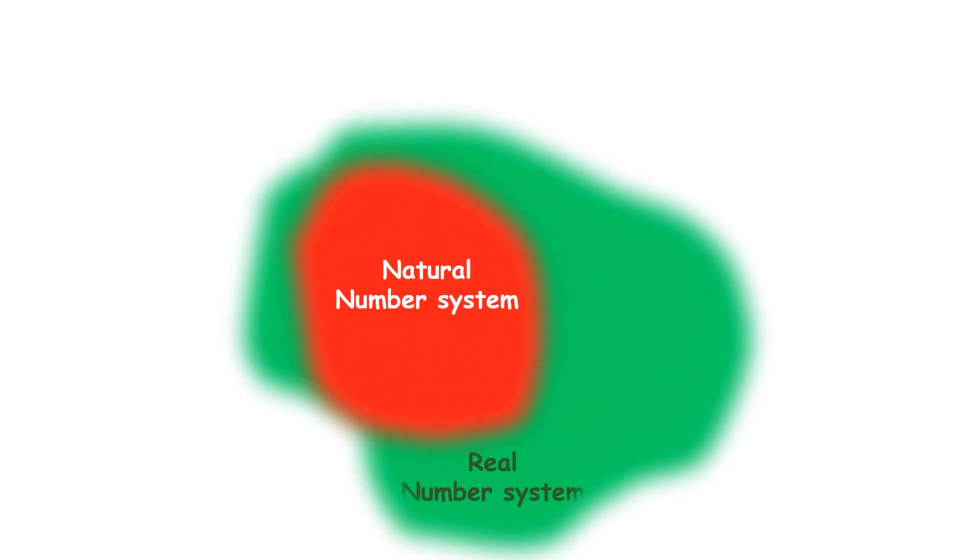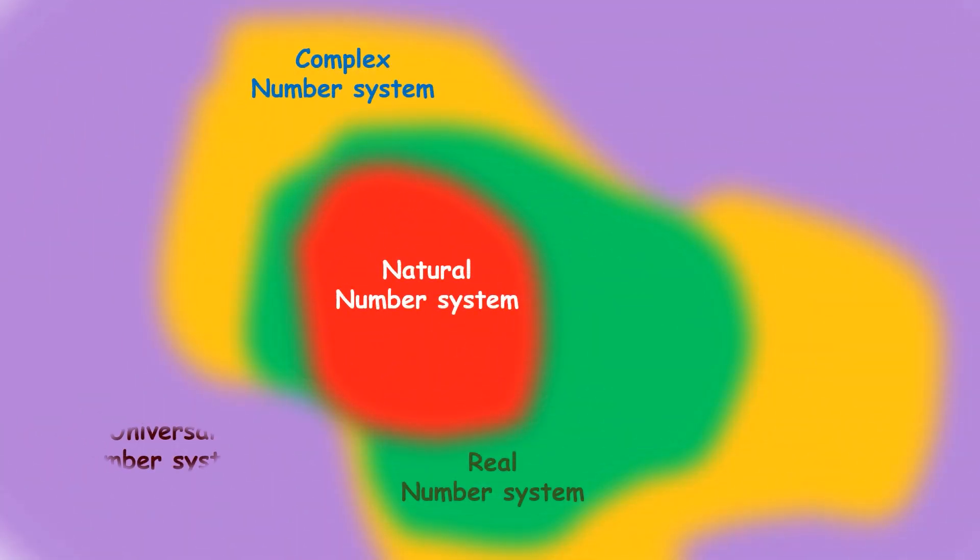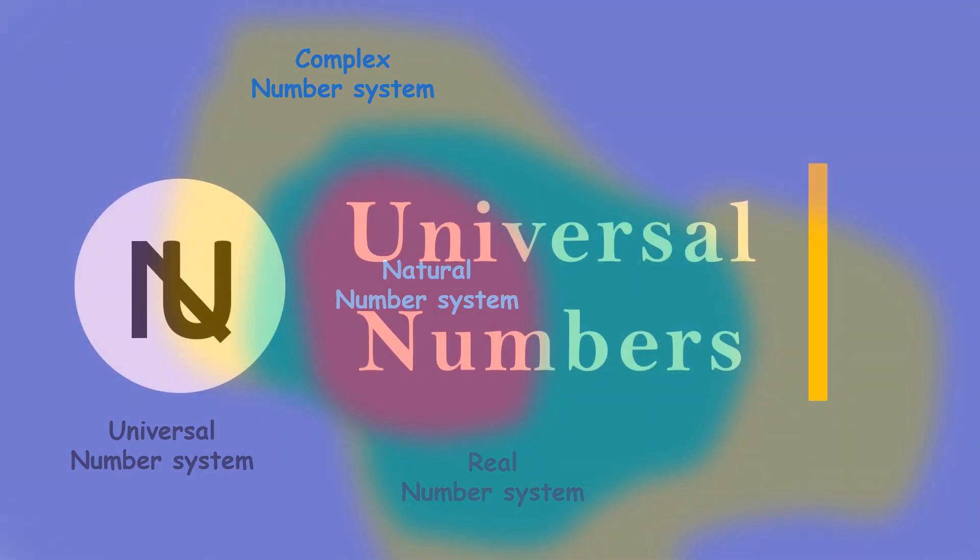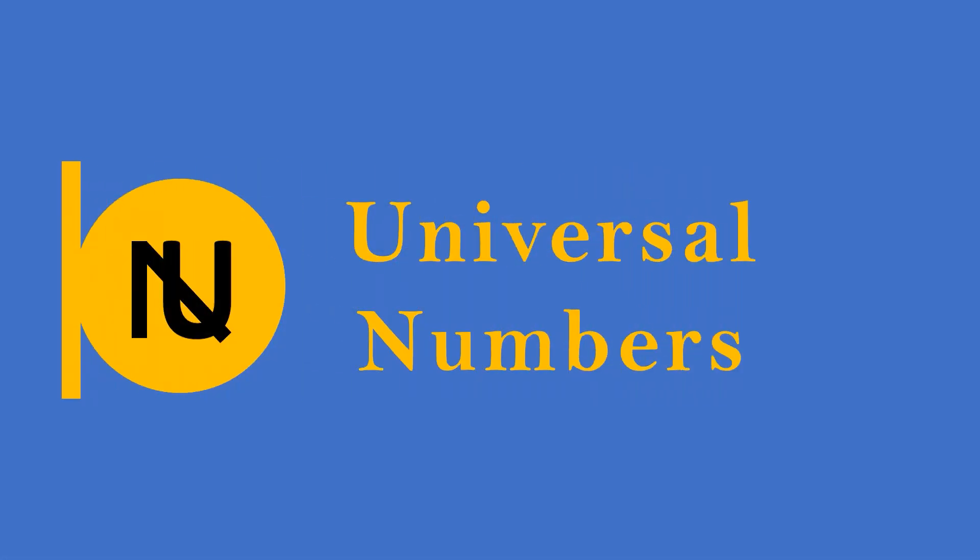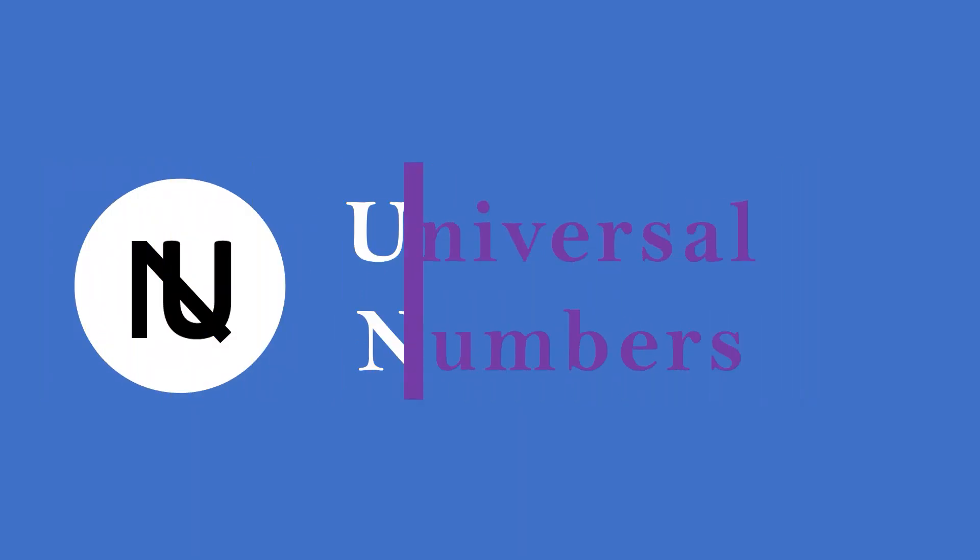There are many number systems and domains in mathematics, including a newly discovered number system named the universal number system. One basic question is why this new domain is created - in fact, why any domains were created, which we will try to understand briefly in this video.